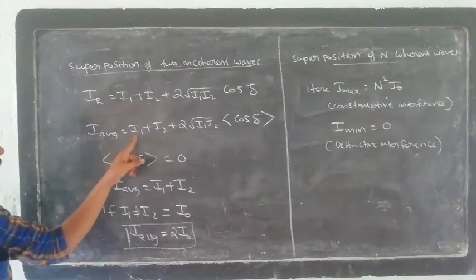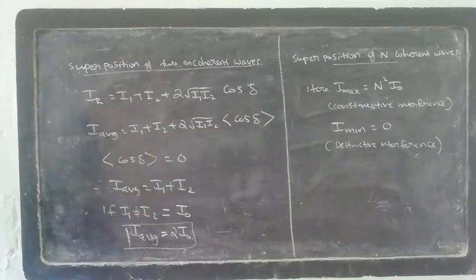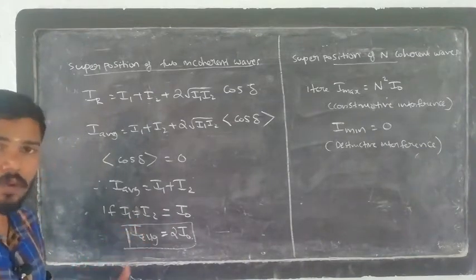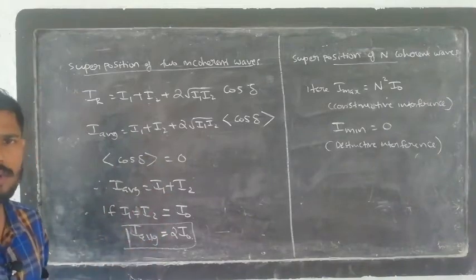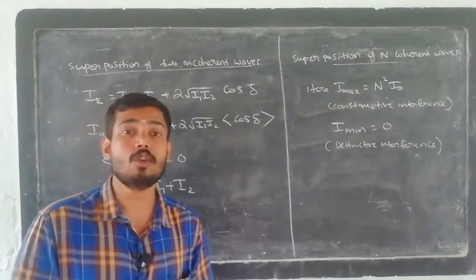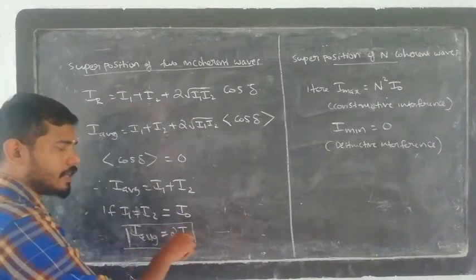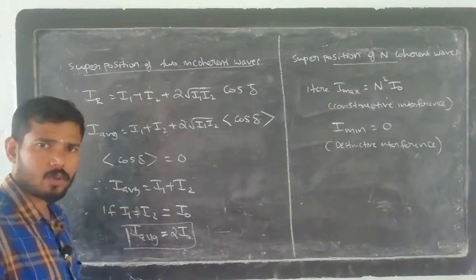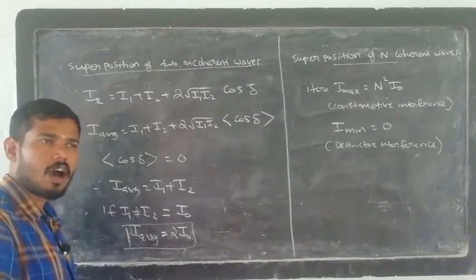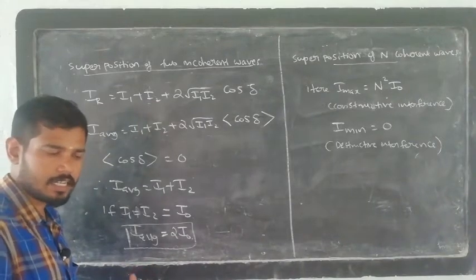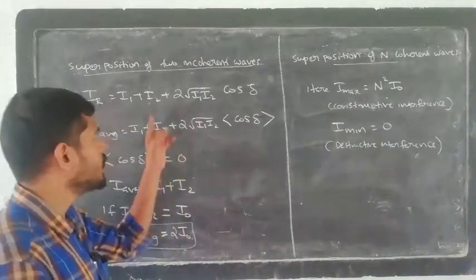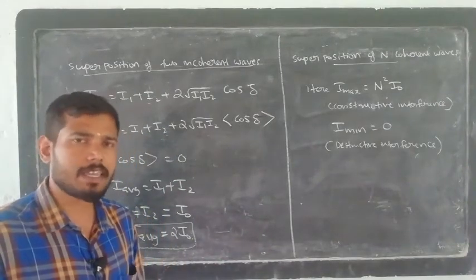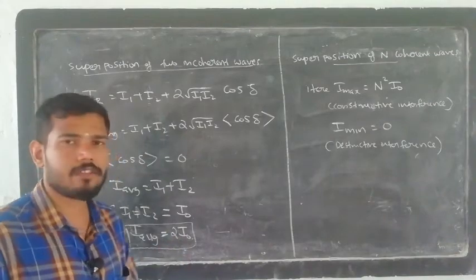When the average of cos(delta) is zero, and i1 = i2 = i0, the average intensity is: I_avg = i0 + i0 = 2i0. This gives uniform illumination — no interference pattern, no dark and bright fringes. We get uniform illumination instead of an interference pattern.